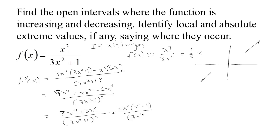Factoring the numerator, we can pull out 3x squared leaving x squared plus 1, all over (3x squared plus 1) to the fourth. The derivative can't be undefined because the denominator is x squared plus a positive number — it can never equal zero. So the only critical points come from setting the numerator to zero, and since x squared plus 1 can't be zero, the only critical point is at x equals 0.